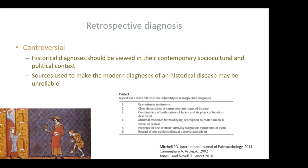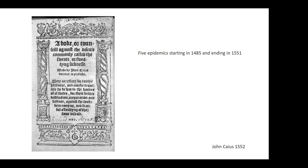The sources used to make modern diagnoses of a historical disease may actually be quite unreliable. To mitigate against some of those issues, Mitchell wrote a paper listing aspects of a text that might improve the reliability of a retrospective diagnosis. One of them is an eyewitness testimony and a clear description of symptoms and signs of disease, and this particular treatise probably ticks a lot of those boxes.